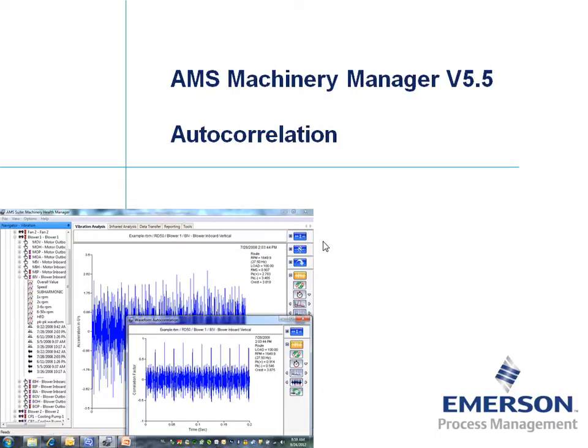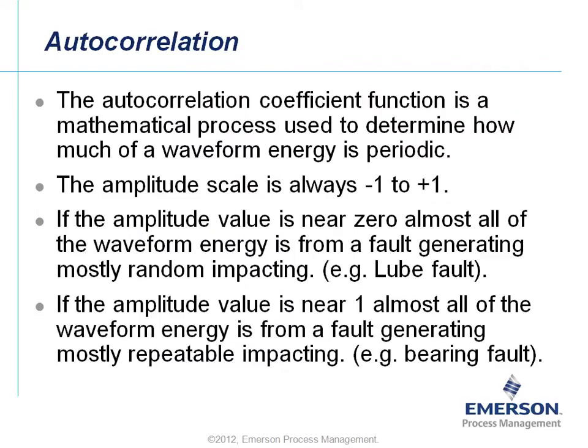This tutorial covers the autocorrelation feature inside AMS Machinery Manager version 5.5 or higher. The autocorrelation coefficient function is a mathematical process used to determine how much of a waveform's energy is periodic. The amplitude scale is always from minus 1 to plus 1. If the amplitude value is near 0, almost all of the waveform energy is from a fault generating mostly random impacting — for example, a lubrication fault.